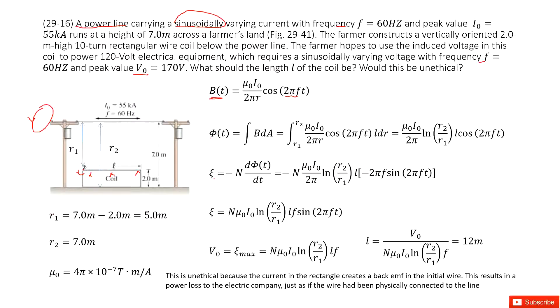So R₁ is the top side of the coil, from 7 meters minus 2 meters equals 5 meters. The bottom side is 7 meters.